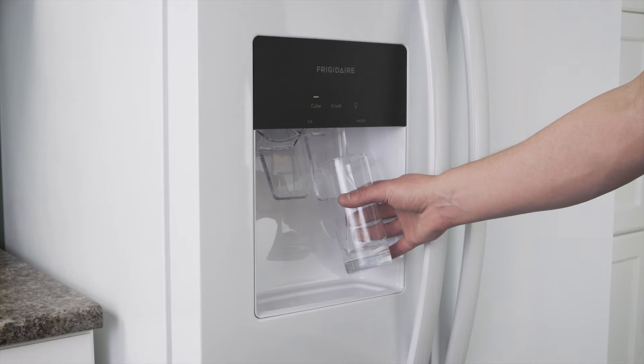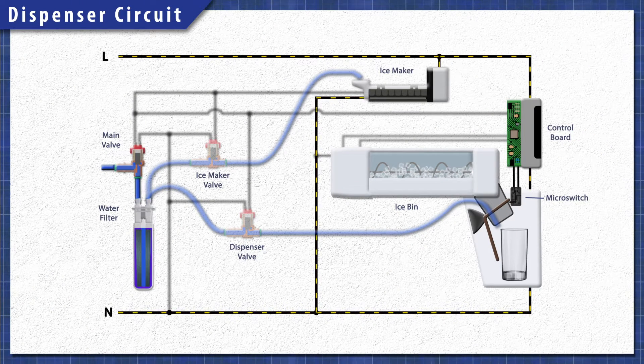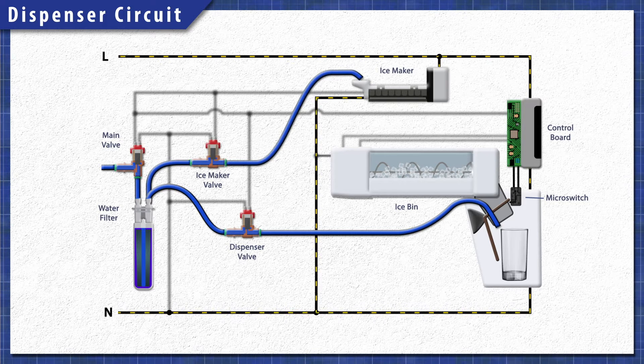Refrigerators use water inlet valves to control the distribution of water. This may include a valve for the water filter, one for the dispenser, and another for the ice maker.